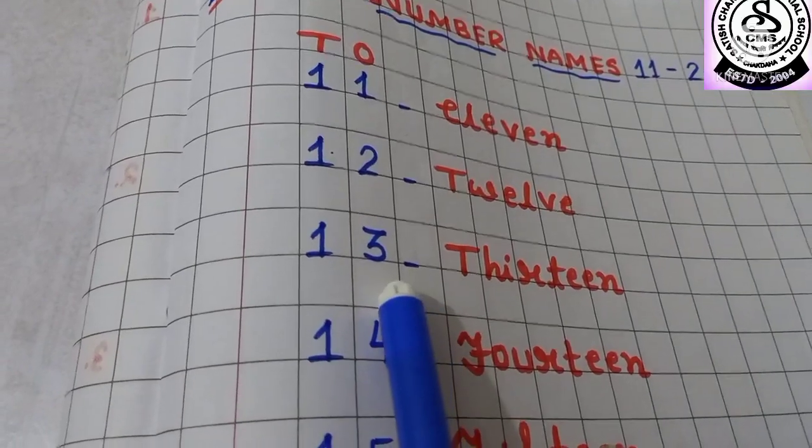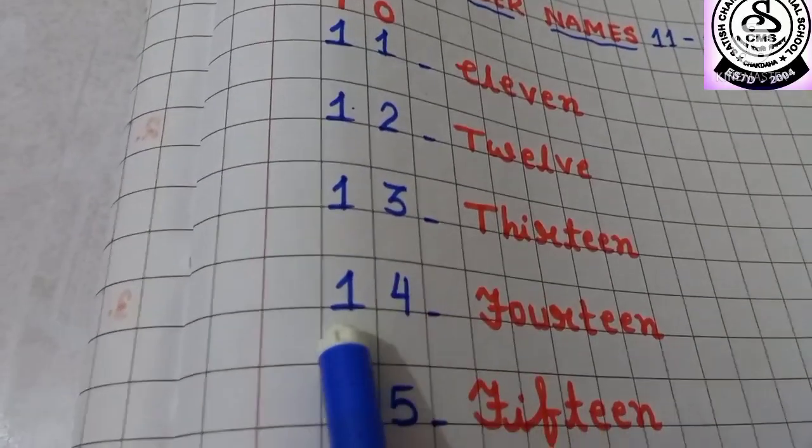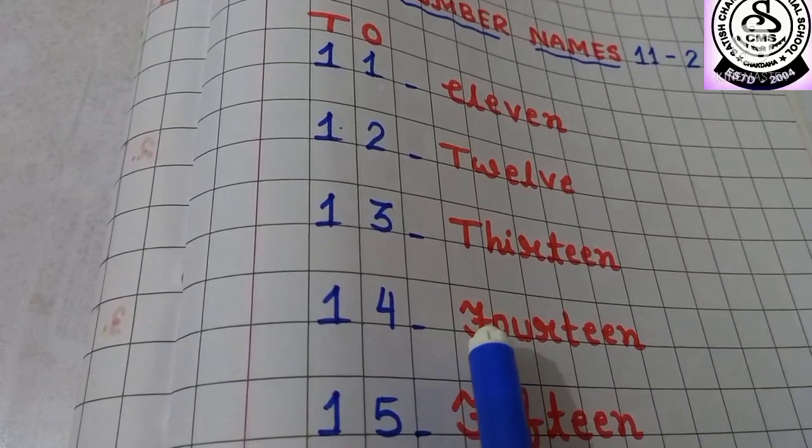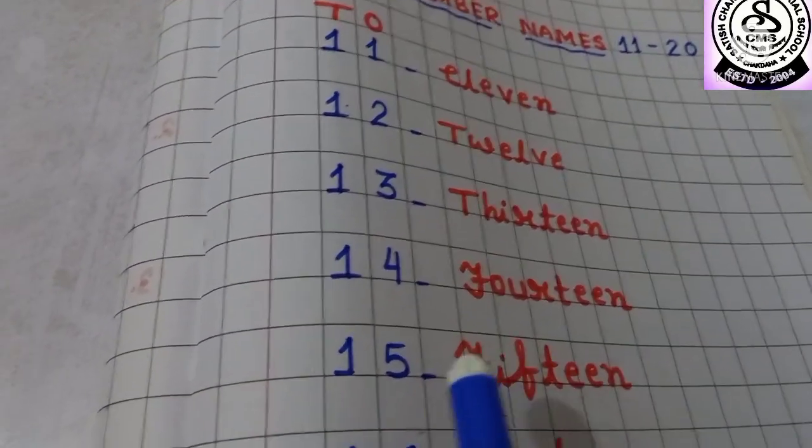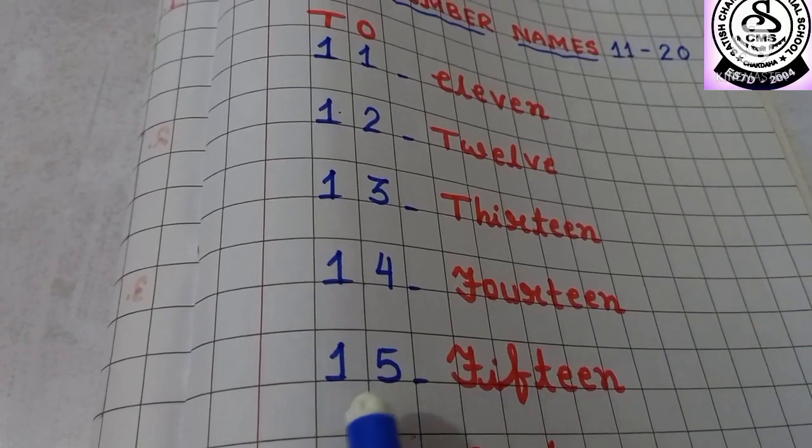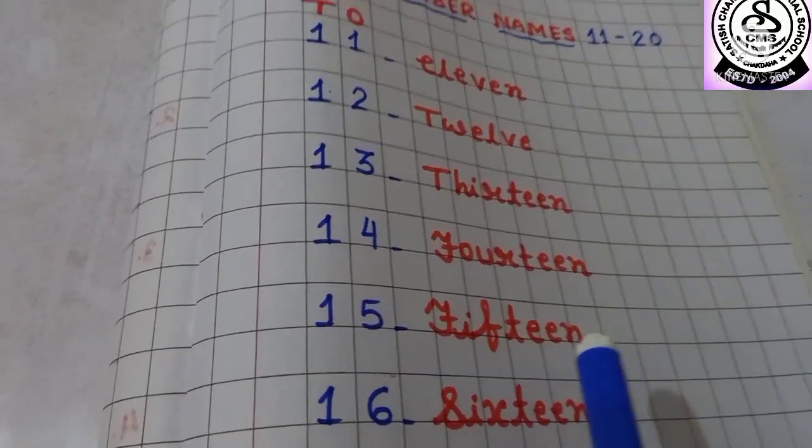Then again you have to keep one box gap. Then 1, 4, 14. F-O-U-R-T-E-E-N, fourteen. Then 15. F-I-F-T-E-E-N, fifteen.